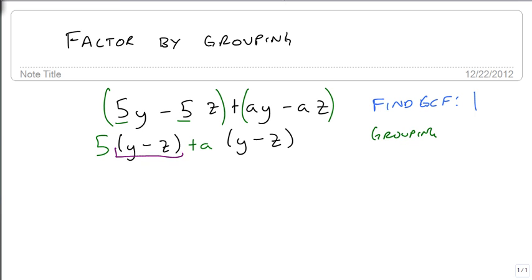If we look carefully, we'll notice that both of these have a y minus z in common. So we can pull out a y minus z, and that leaves behind a 5 plus a.